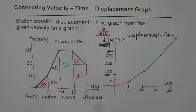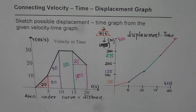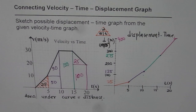That is how the displacement-time graph should look. I hope you understand and appreciate how we can translate a velocity-time graph into a displacement-time graph. Thank you and all the best.